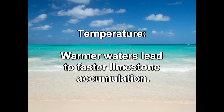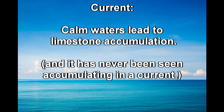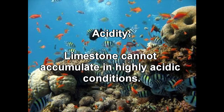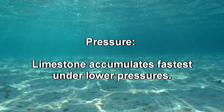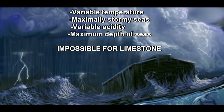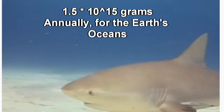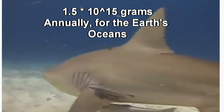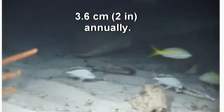Limestone has a variable precipitation rate, and thus a variable deposition and accumulation rate too, depending on several factors. The first is temperature — precipitation will be faster in warm conditions and solubility will go down as temperature goes up. Current: precipitation of limestone occurs only in calm conditions. Acidity: accumulation is prevented in acidic conditions. And pressure: precipitation is faster as pressure is lessened. You can probably already see where this is going, considering the flood is rarely characterized as a warm, calm, low-pressure, and low-acidity environment.